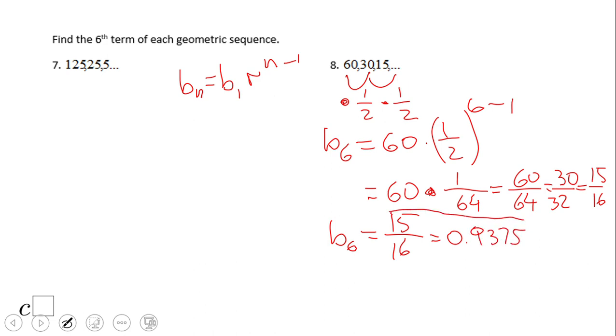If you end up with any of these two answers, then we can have a rational form of the number 15 over 16 or a decimal, and that is the sixth term of this geometric sequence, number 8.